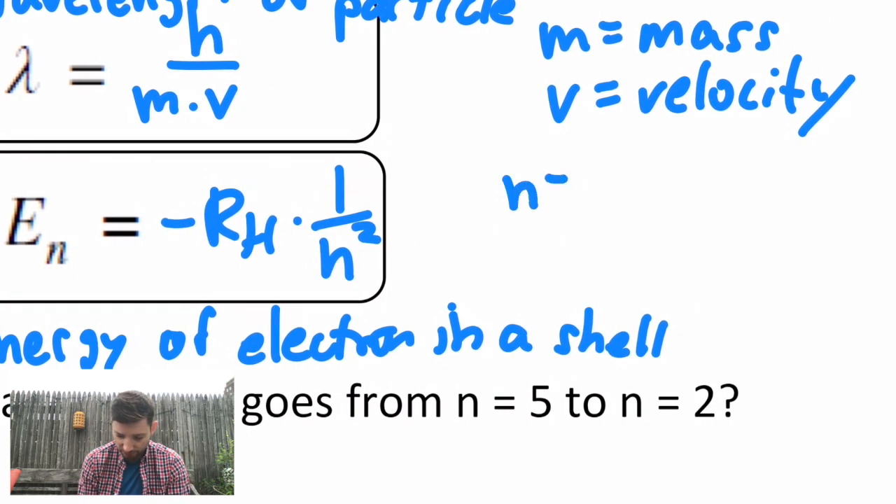And then the last equation, it's also related to energy, but this is the energy of an electron in a shell. Energy of an electron in one of those Bohr shells, in a shell. This is equal to a constant negative r sub h, that's called the Rydberg constant, times one over the square of that shell, where n is the energy level. And r sub h is a constant. This is 2.18 times 10 to the negative 18 joules.